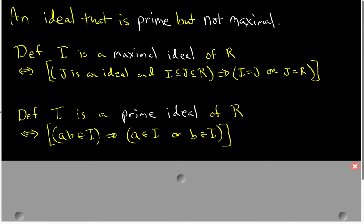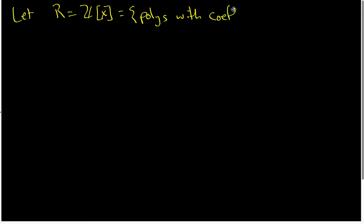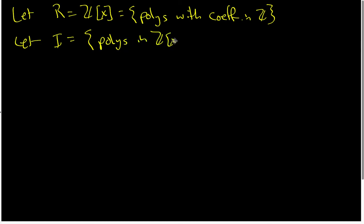Now to find an ideal that is a prime ideal but not maximal, we need to look at a polynomial ring. We are going to let our main ring R be Z[X], which is just the ring of polynomials with coefficients drawn from Z. And I'm going to let I be the set of polynomials in Z[X] with constant term equal to zero.